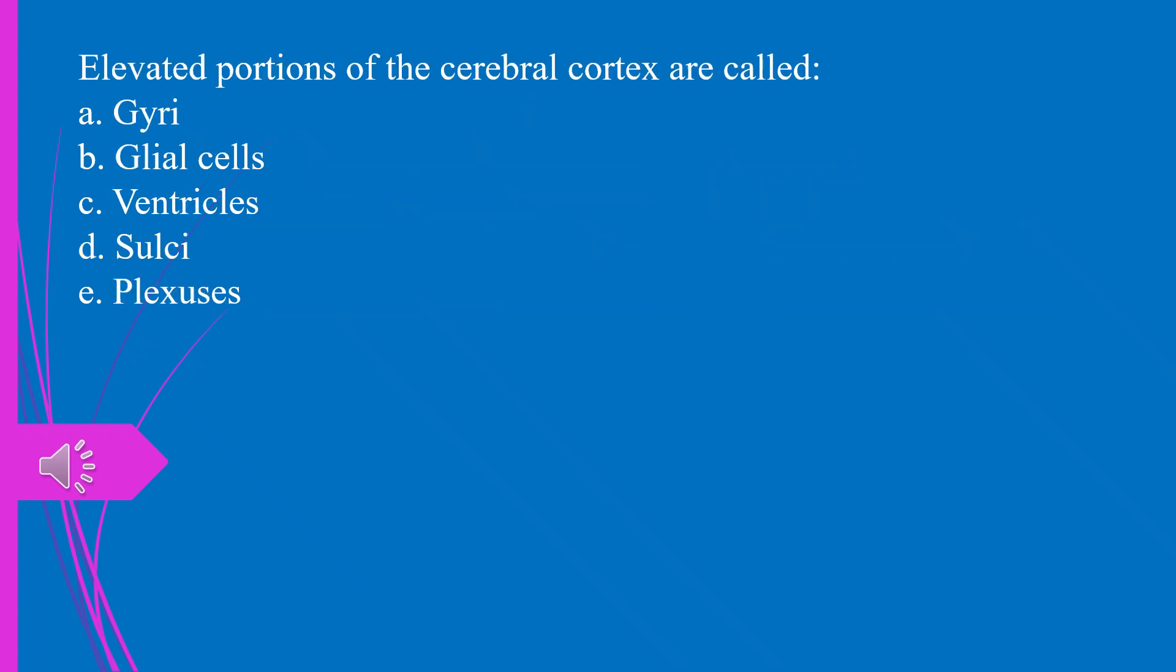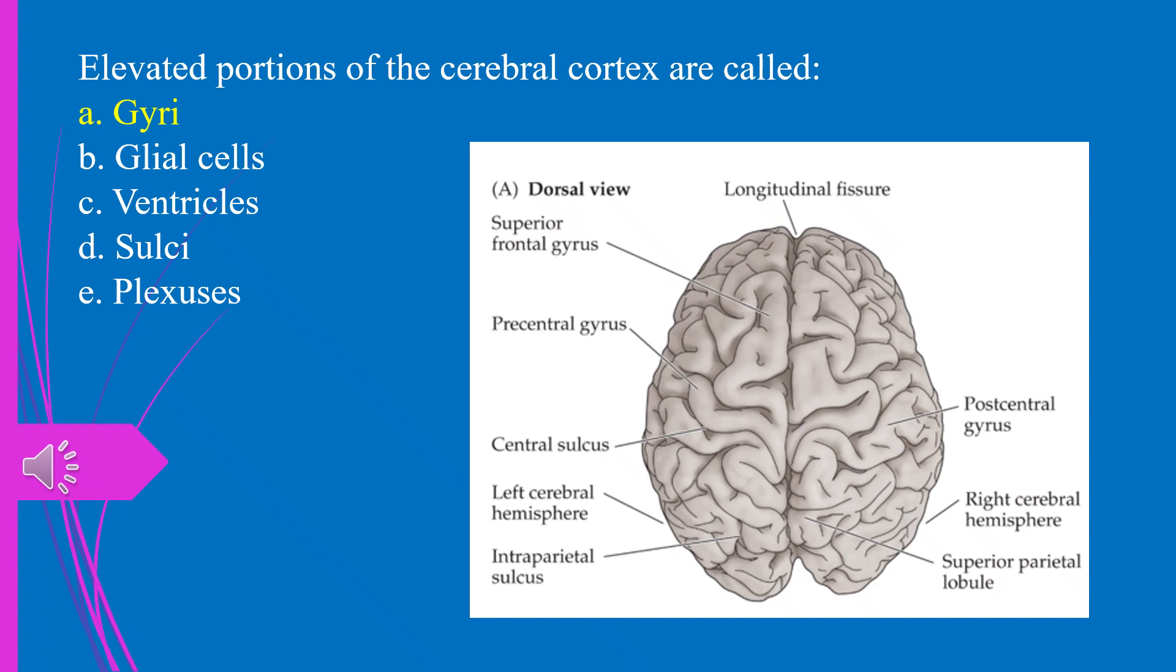Elevated portions of the cerebral cortex are called, A. Gyri. B. Glial cells. C. Ventricles. D. Sulci. E. Plexuses. The answer is A. Gyri.